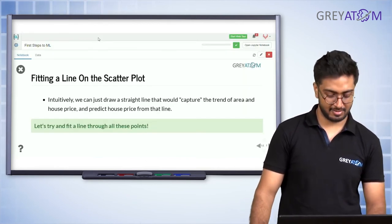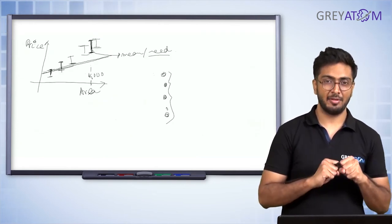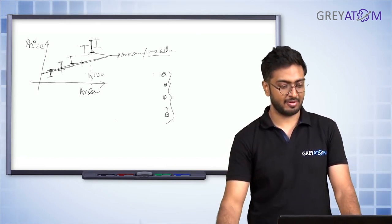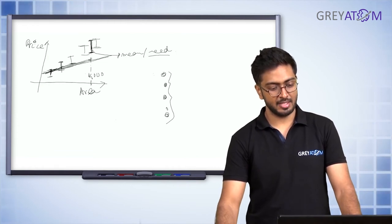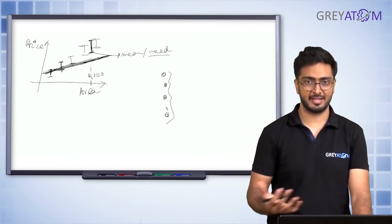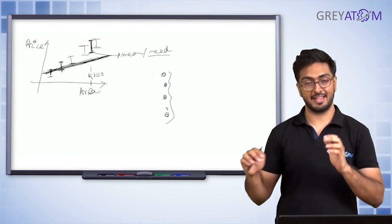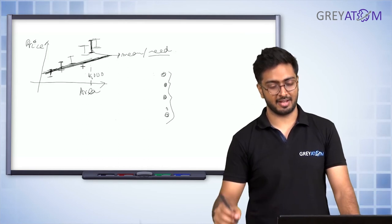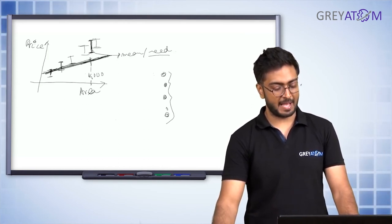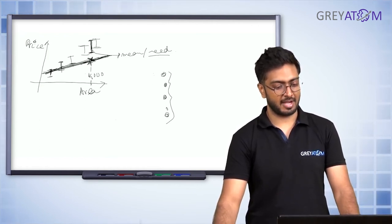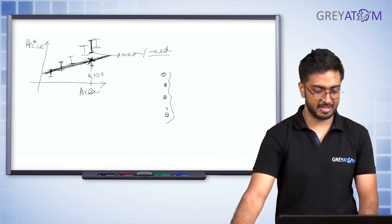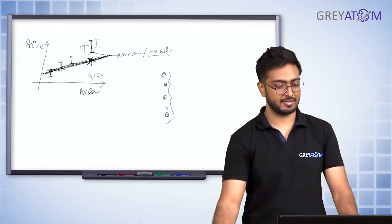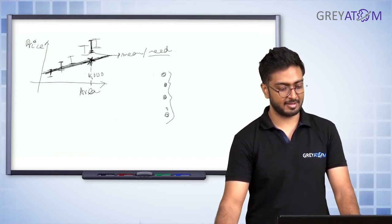What you want to do instead is take the entire data into account and see the overall pattern — not just five data points. Using the entire data gives you a much more robust and stronger way to infer what is going to happen. So what you do is take the entire data and fit a straight line, because you know there's a linear relationship: as area increases, price increases. That straight line captures the overall trend from the entire data.